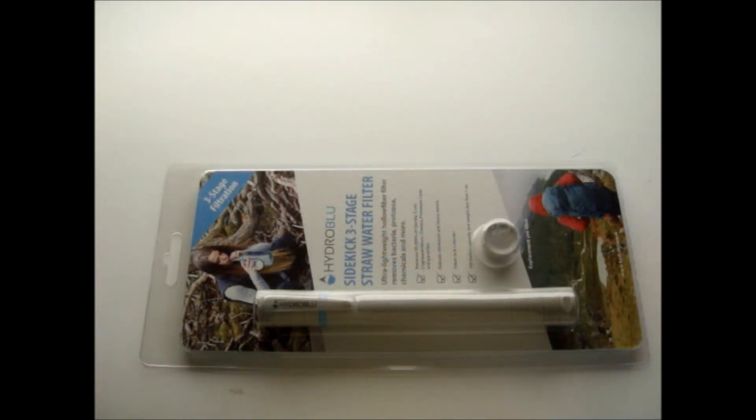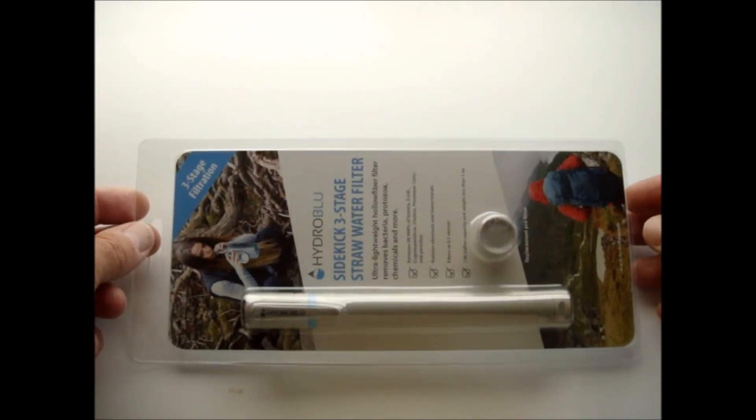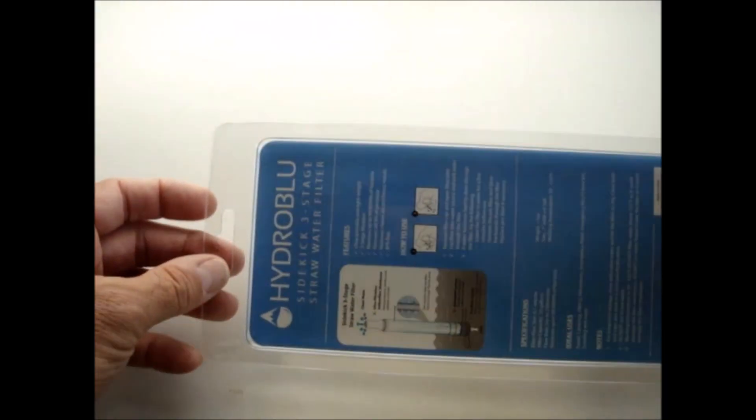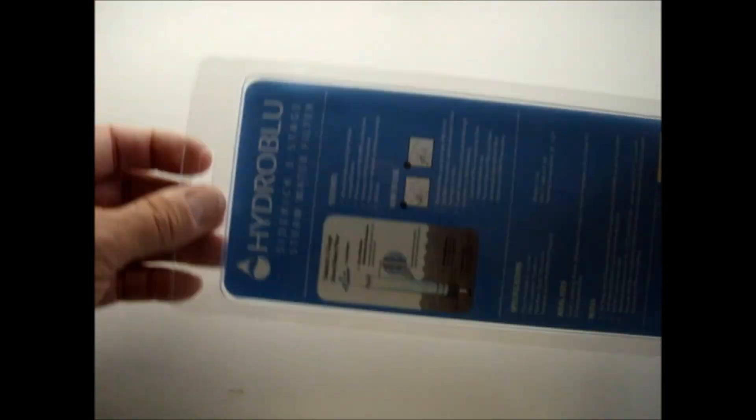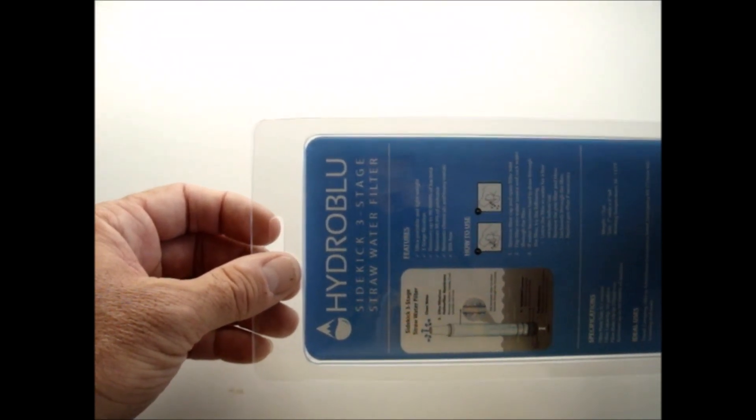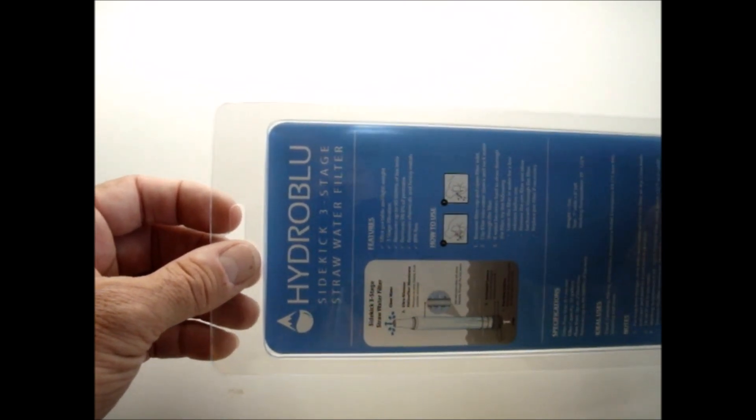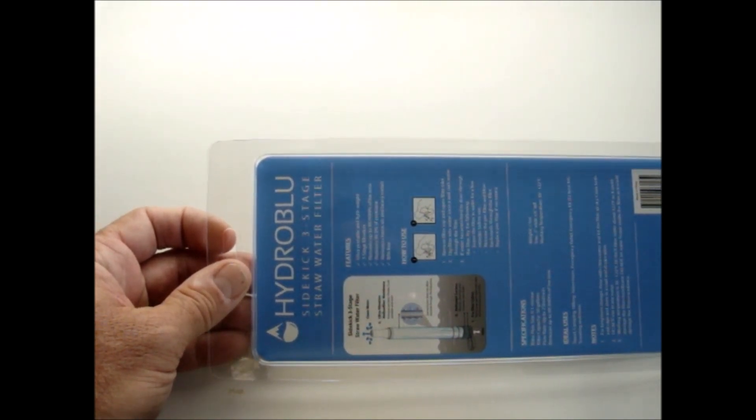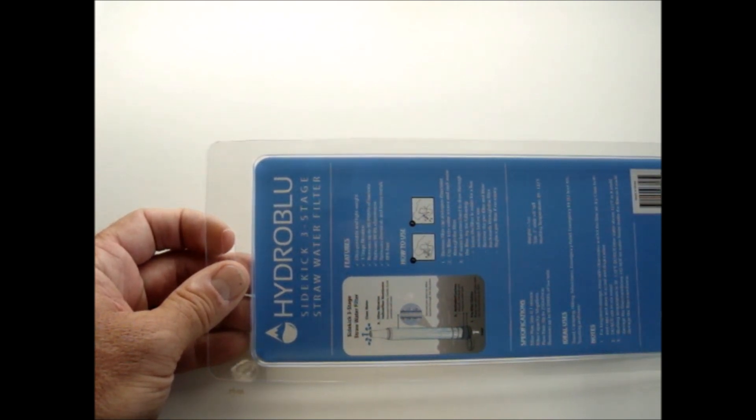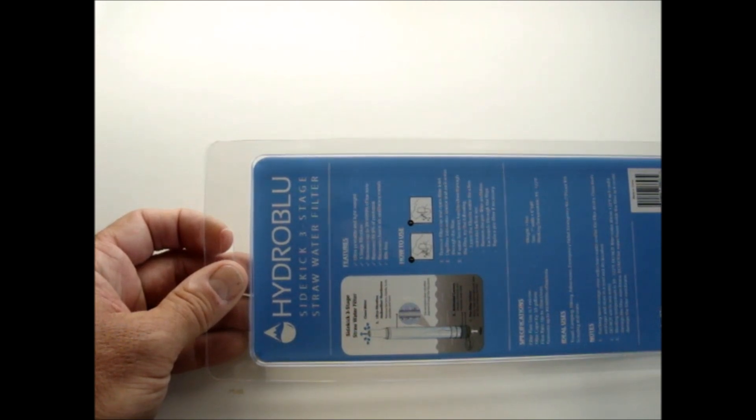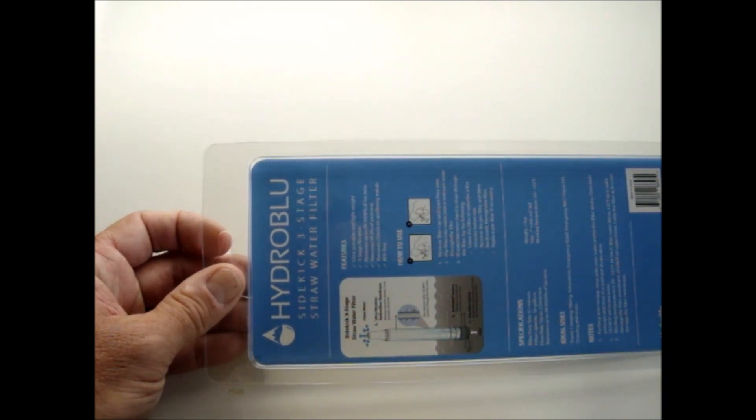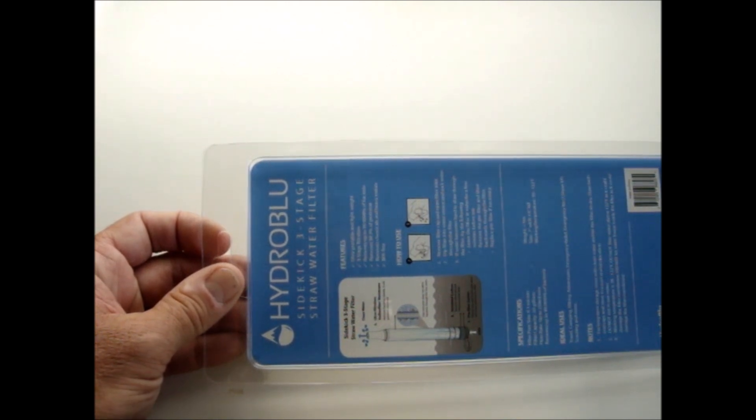When you order it on Amazon, you just get the filter and a replacement cartridge. Sorry about the lighting here, it's getting close to winter and the sun is very low. I will post a copy of the specs in the intro section of this video. Basically it filters out bacteria, it's good to 0.1 microns. The capacity for this thing is up to 50 gallons, and they say it can flow up to about 250 milliliters per minute, so it would take you four minutes to drink a water bottle with this thing.